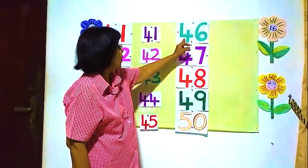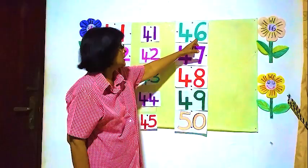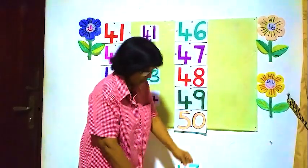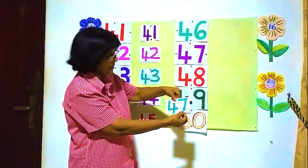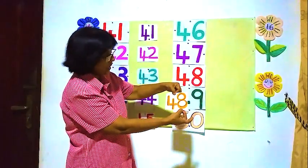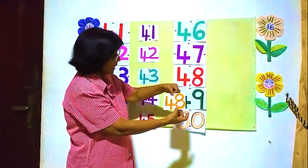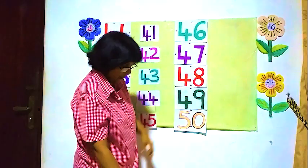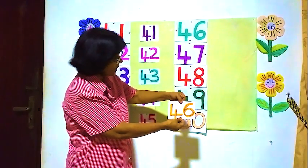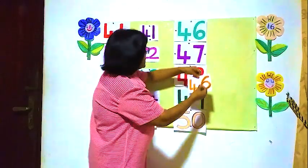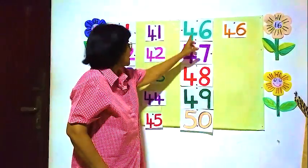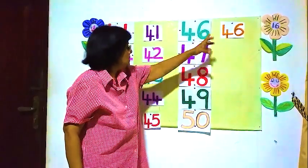What is the first number here? 4 and 6, 46. Where is 46? Is this 46? Is this 46? This is 47. What about this one? This is 48. We want 4 and 6, 46. Here 46.